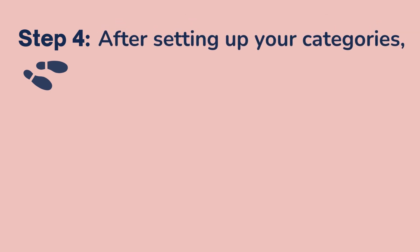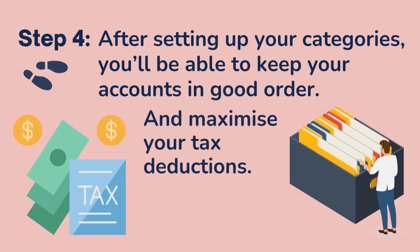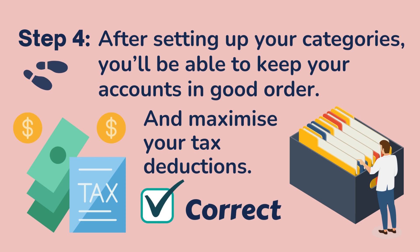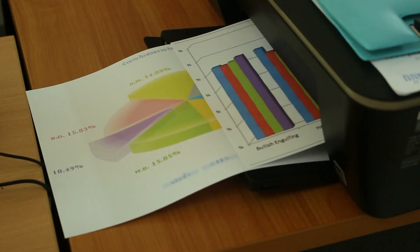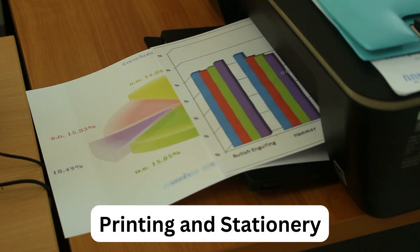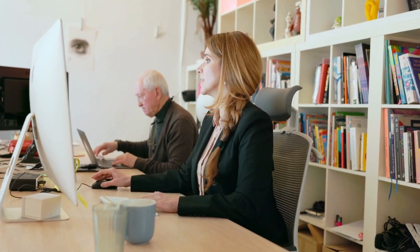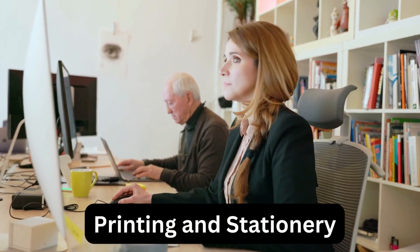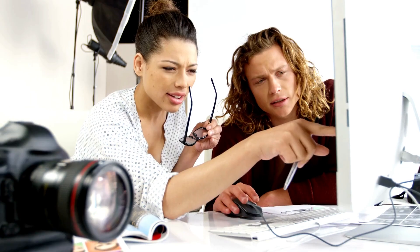Step 4. Once all your categories are set up, you'll be able to keep your accounts in good order and maximize your tax deductions by entering your transactions into the correct categories. For example, if you have an expense category called printing and stationery and you're able to claim a 100% tax deduction for those costs, your accountant will easily be able to see the total amount you've spent for the year by simply going to the printing and stationery category on a report and grabbing the total number.